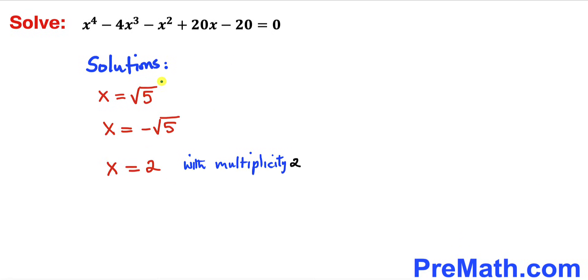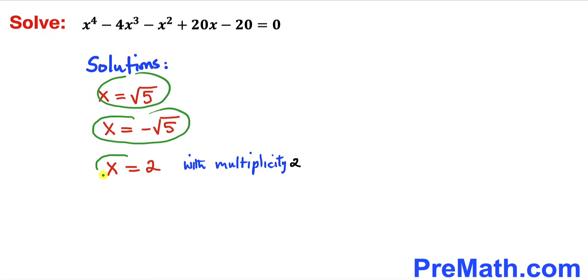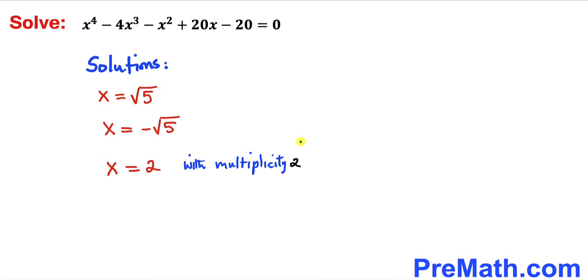So our solution set is x equals positive or negative square root of 5, and x equals 2 (with multiplicity 2). That is our final answer.